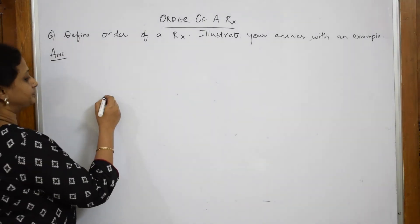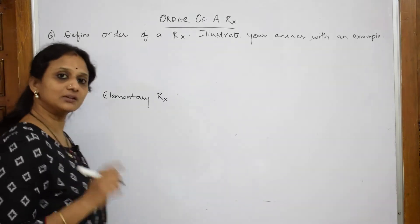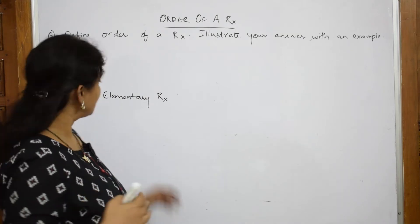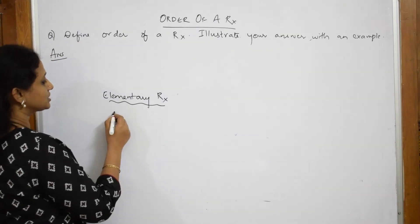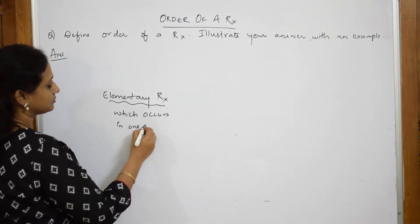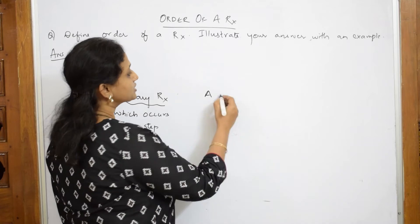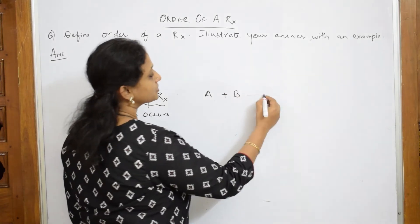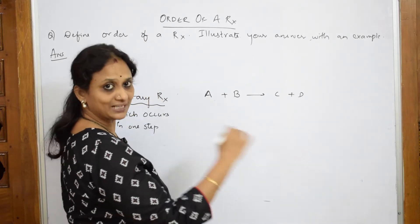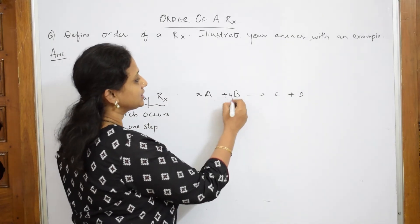Suppose if I have an elementary reaction — an elementary reaction is one which occurs in only one step, as opposed to a complex reaction which occurs in two or three steps. So, suppose I have a reaction: A reacts with B to form products C plus D. Now I am going to write a stoichiometric, meaning balanced, reaction. After balancing, the coefficient I got for A is X and for B is Y.